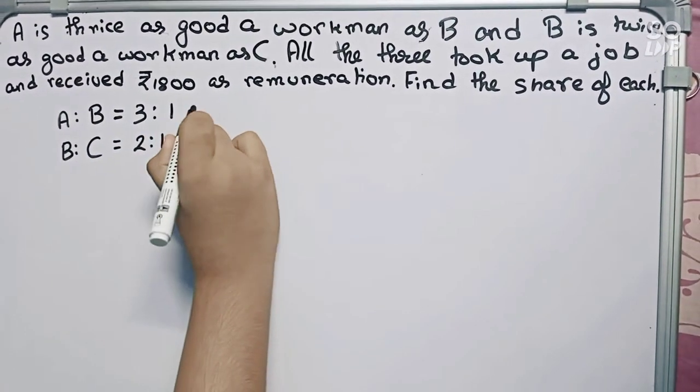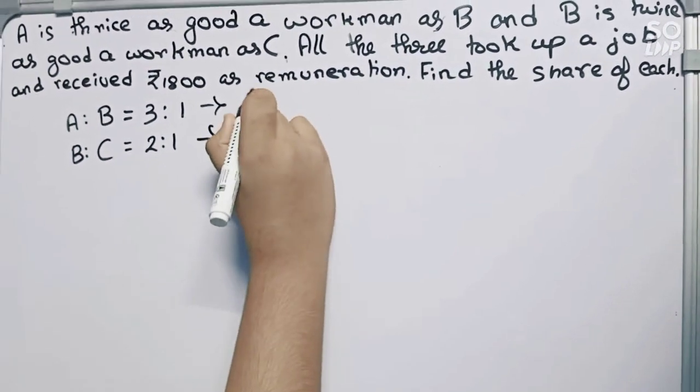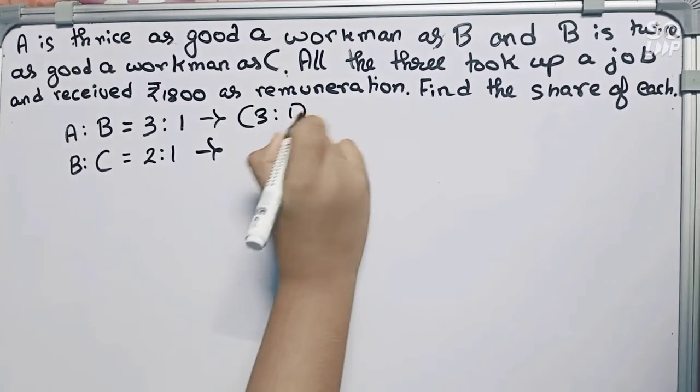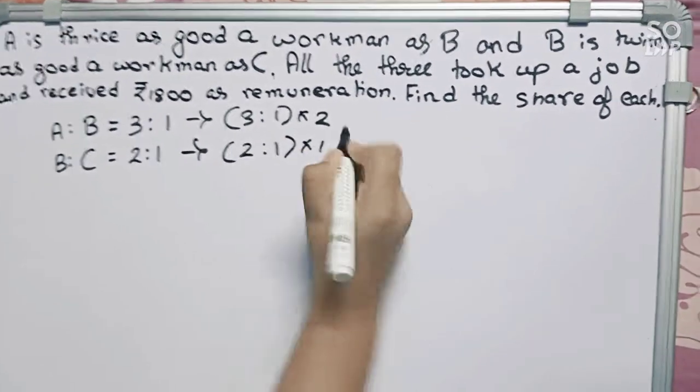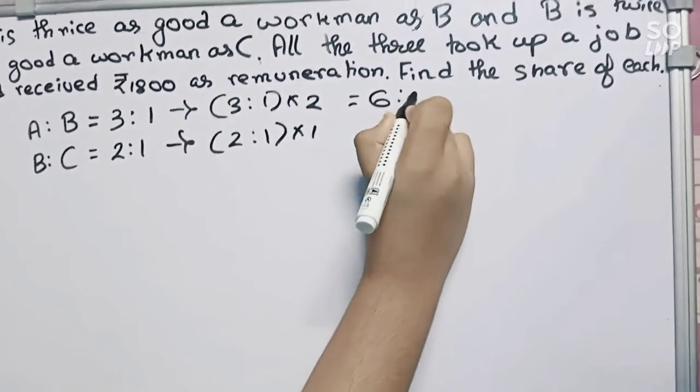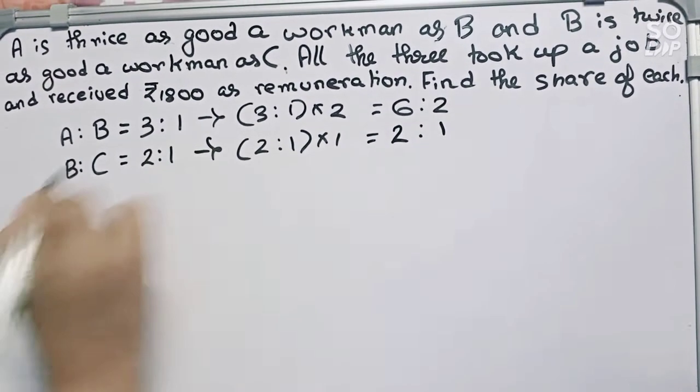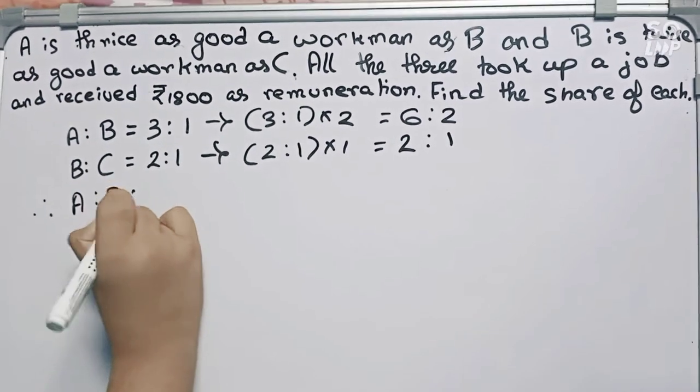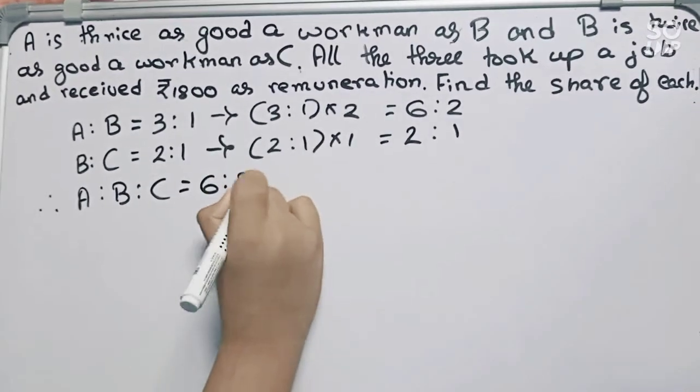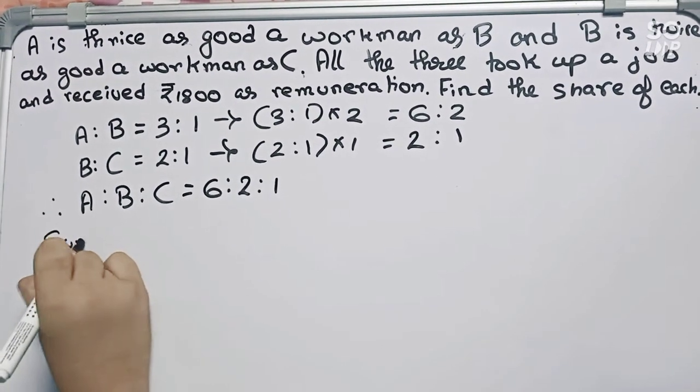So both numbers we will multiply. In first we will multiply (3:1) into 2 and (2:1) into 1. So it will become 6:2 and 2:1. Therefore our total ratio becomes A:B:C which is 6:2:1. Now you have to find the sum of ratio.